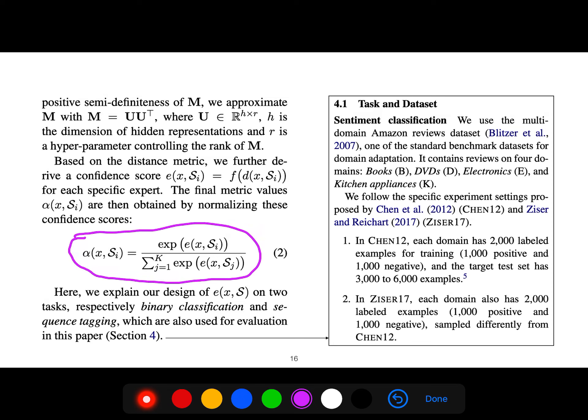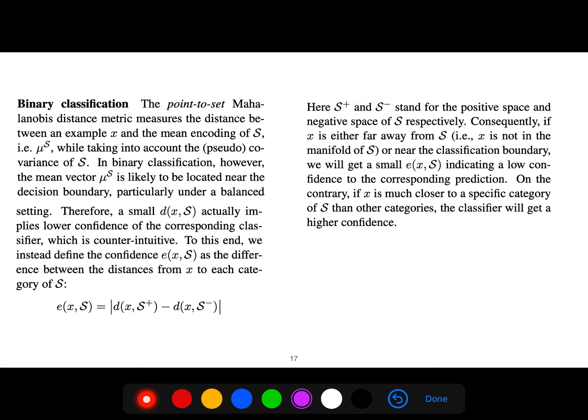Depending on E, which is - we use f of d because it has better expressiveness, it leverages the expressiveness of another neural network. So E is the confidence score. The point-to-set distance metric measures the distance between example and the mean encoding of S while taking into account the pseudo covariance of S. In binary classification, however, the mean vector is likely to be located near the decision boundary, particularly under a balanced setting. Therefore small d actually implies lower confidence of the corresponding classifier, which is counterintuitive.